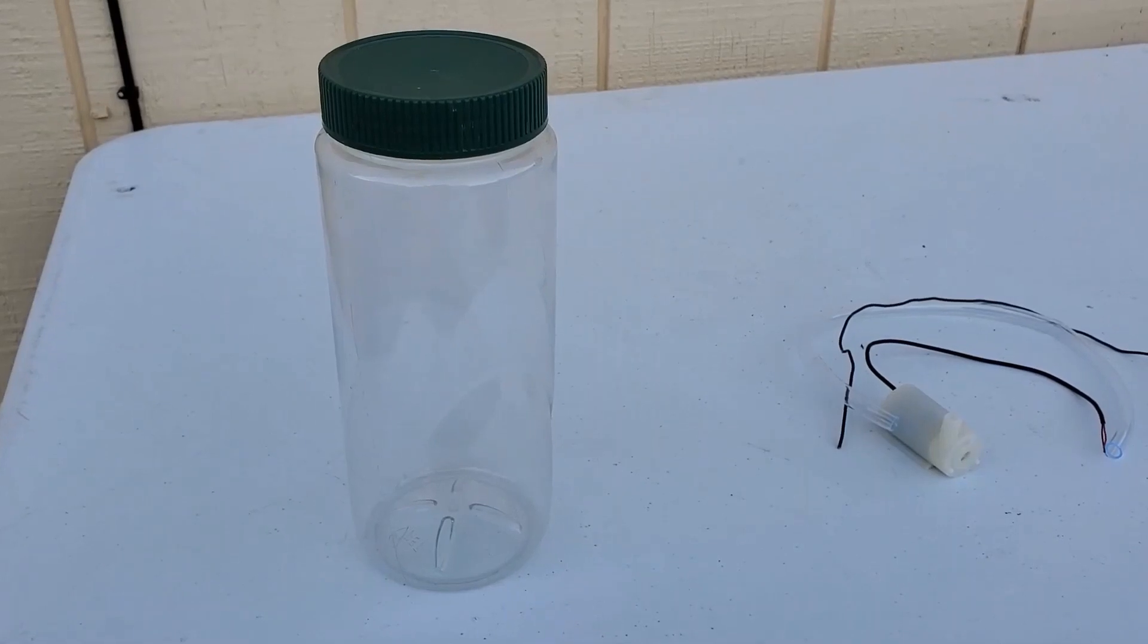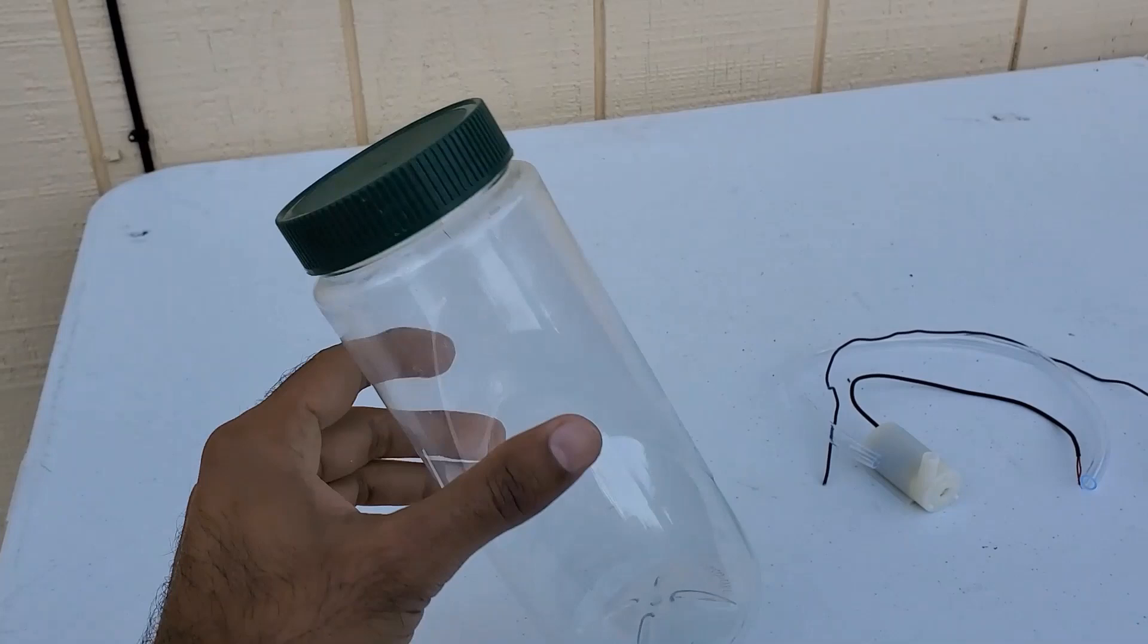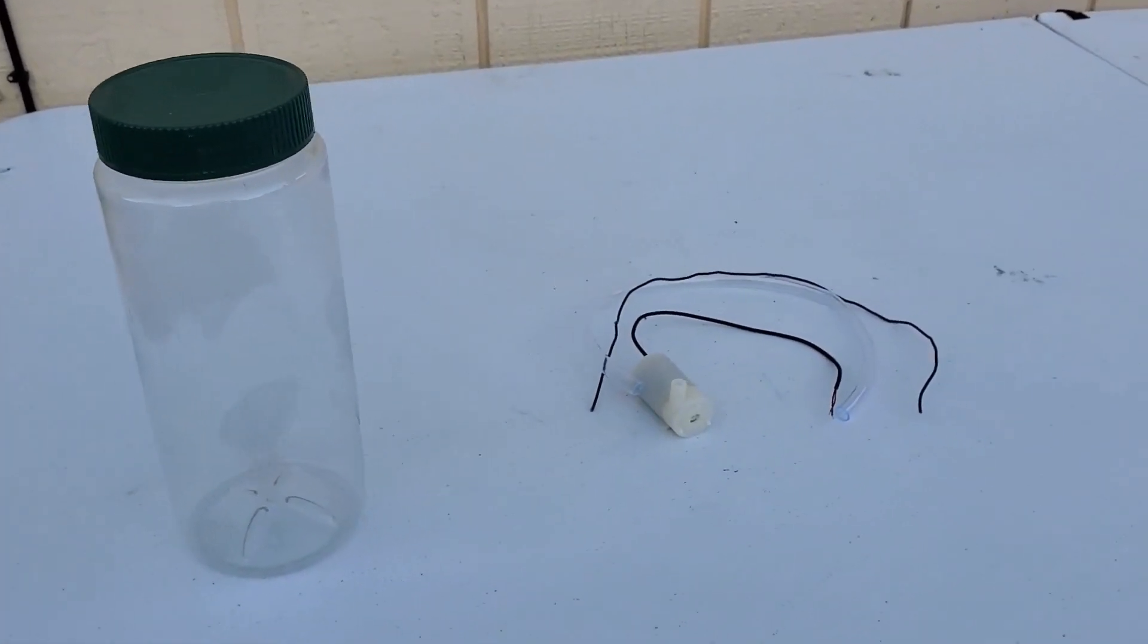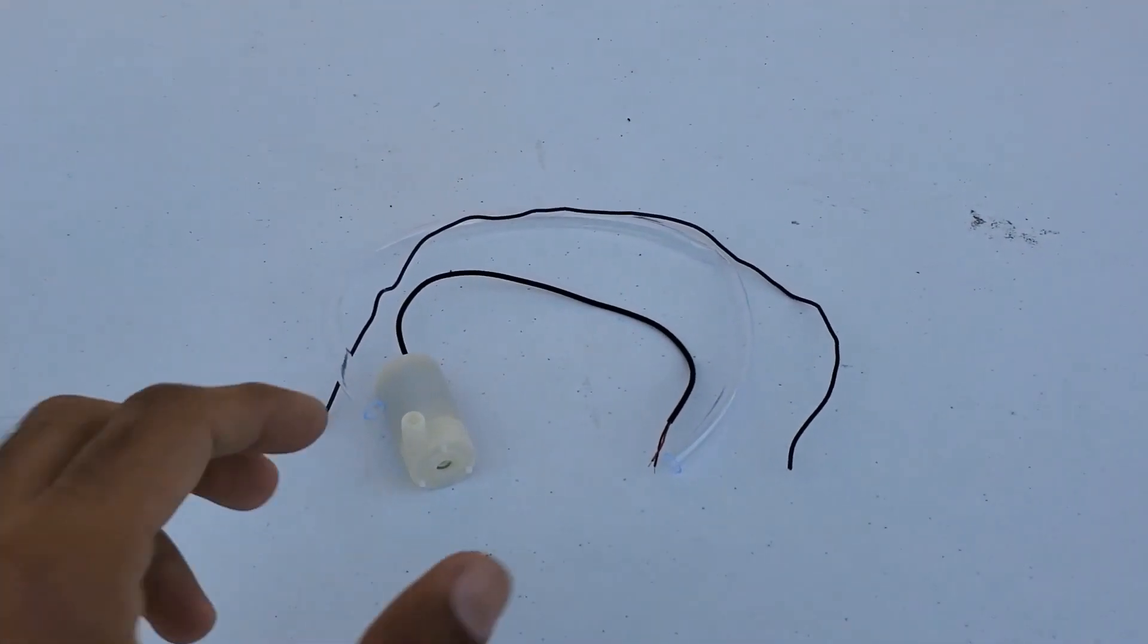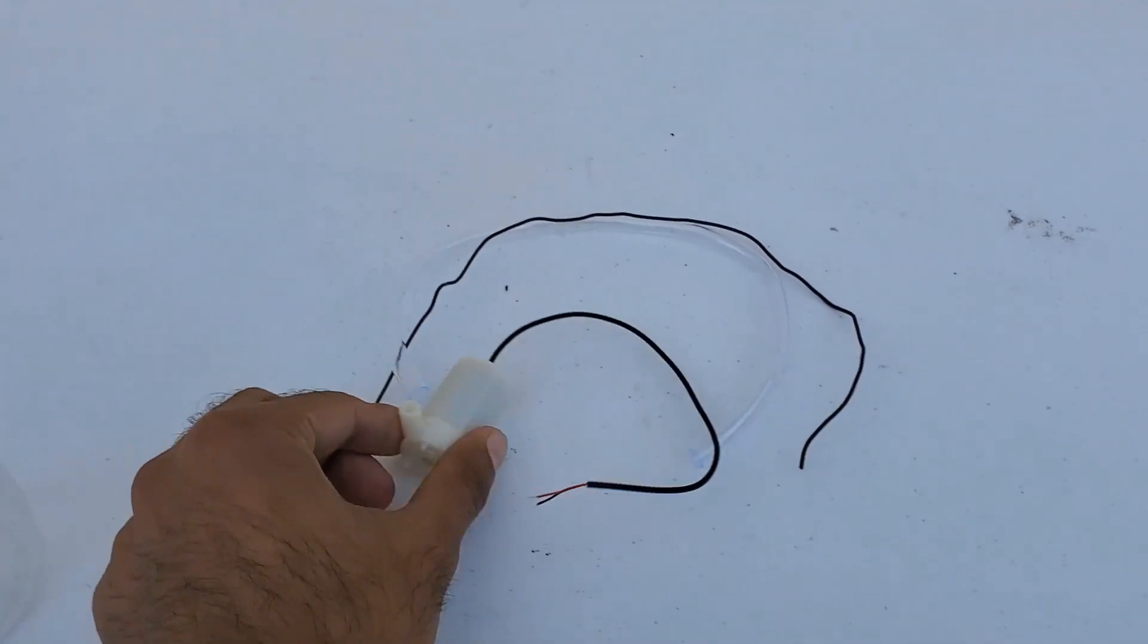To make this touchless dispenser, you'll need a canister—I'm using a trail mix one—a 5-volt pump with all the tubing, and some chicken wire.